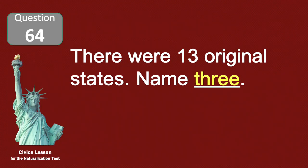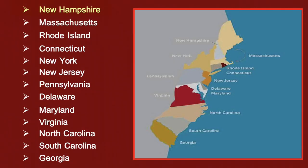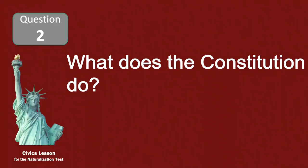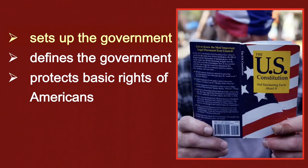There were 13 original states — name three. New Hampshire, New York, New Jersey. What does the Constitution do? It sets up the government.